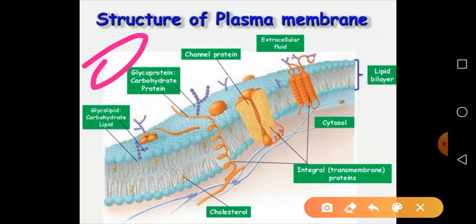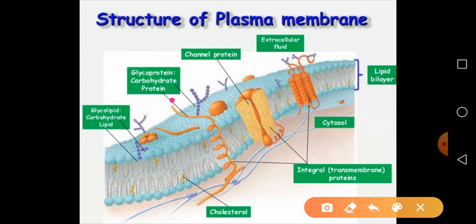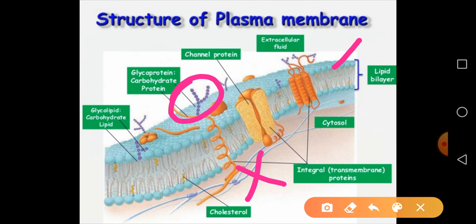This is the outside portion of the cell and this is the inside portion. Carbohydrates are attached only to the outer leaflets of the membrane — carbohydrates are not attached to the inner leaflet. This is the outer leaflet and this is the inner leaflet. Carbohydrates are attached only to the outer leaflet of the plasma membrane — this is a very important point: carbohydrates are not present in the inner leaflet.